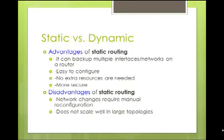The disadvantages of static routing are that network changes require manual reconfiguration. If a network change were to occur, you would have to manually go into the router and change your route — take out the old route, put in the correct new route. It does not scale well in large topologies. If you have multiple networks and multiple routers, that just increases the amount of static route statements you have to add.